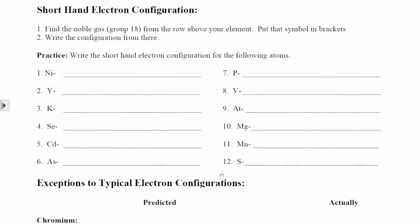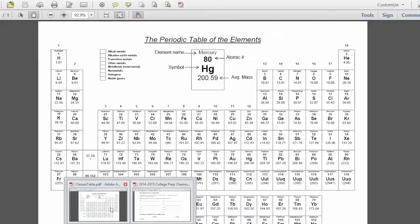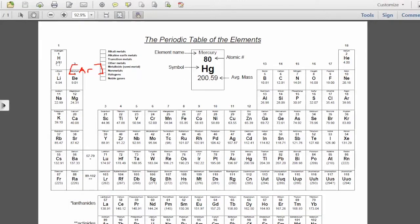In brackets, I put the symbol AR in brackets. By putting argon in brackets, I am saying that we need to consider all of the configurations that come before argon. So argon includes 1s2, 2s2, 2p6, 3s2, and 3p6. Just by writing argon in brackets, I've included that entire electron configuration so you don't have to write it. That's why we call it shorthand.